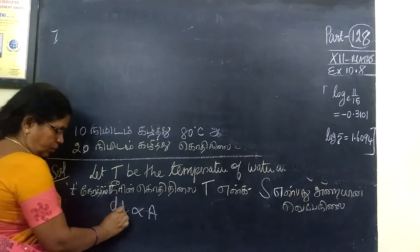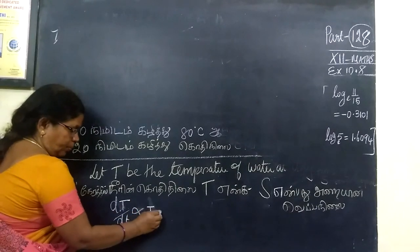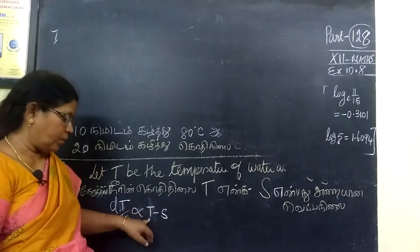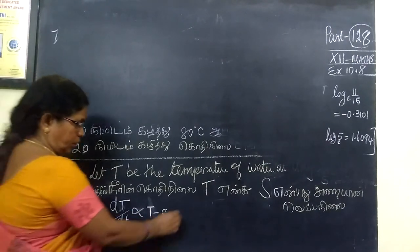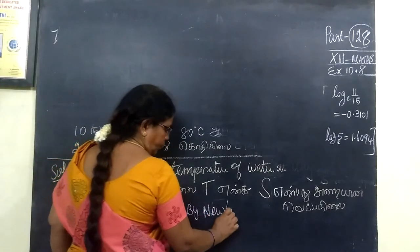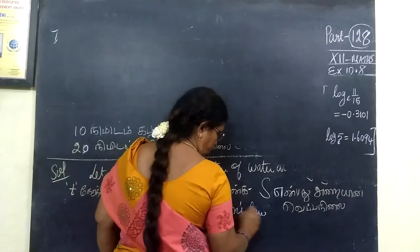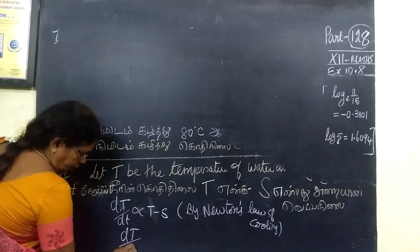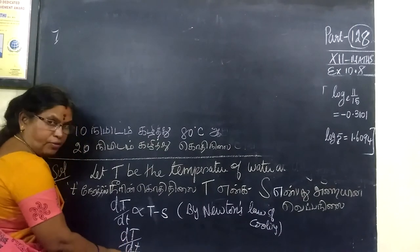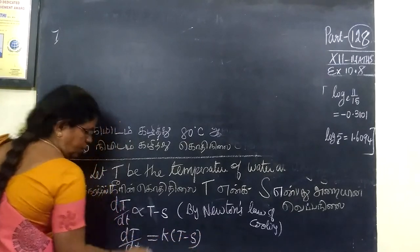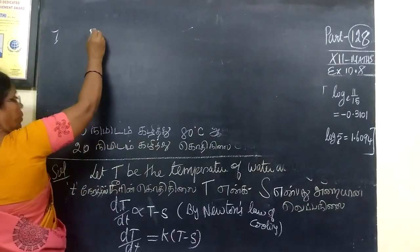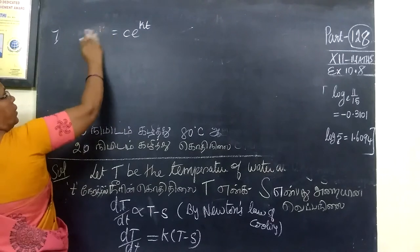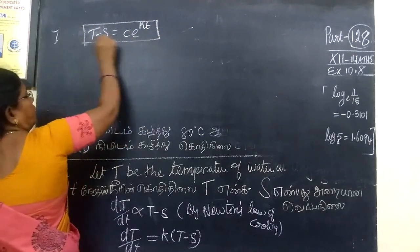The temperature of the water minus the temperature of the room is governed by Newton's Law of Cooling. By Newton's Law of Cooling, the proportional equation gives us: dT/dt = k(T - S), where capital T is temperature and small t is time. Then T minus S equals C·e^(kt). We call this equation 1.